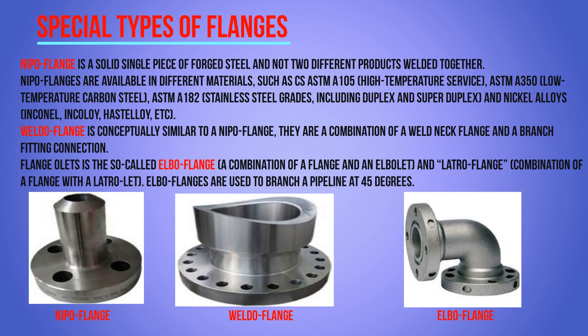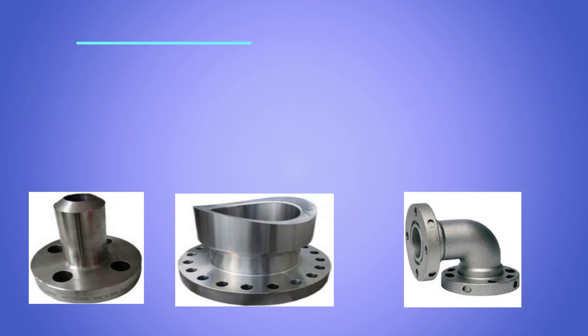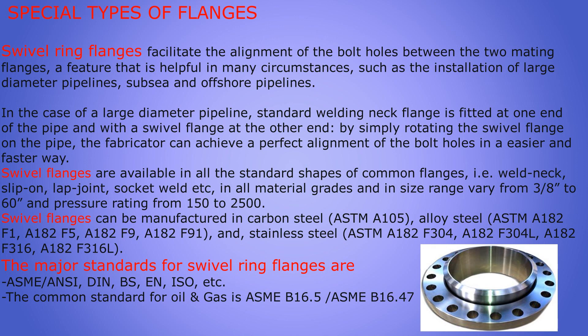Special type flanges: a nippo flange is a solid single piece of forged steel and not two different products welded together. Nippo flanges are available in different materials like carbon steel ASTM A105, ASTM A350 low temperature carbon steel, ASTM A182 stainless steel, duplex, super duplex, and alloys. A weld-o flange is conceptually similar to a nippo flange — it is a combination of a weld neck flange and a branch fitting. An elbow flange is a combination of a flange and an elbow or lateral; elbow flanges are used to branch a pipeline at 45 degrees.